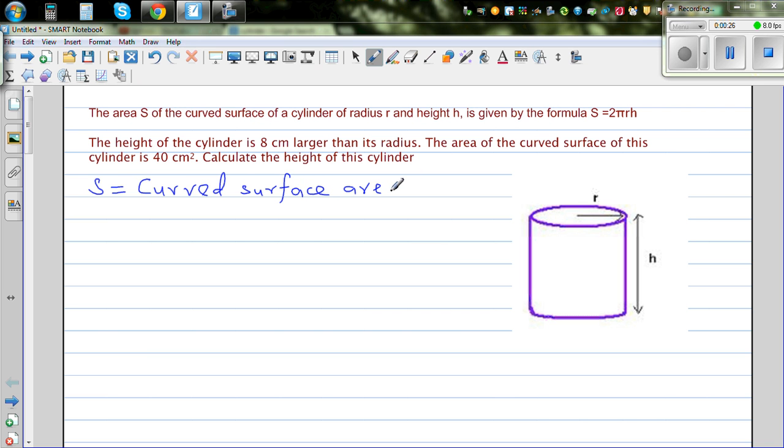A cylinder with a top and bottom has two types of surfaces. One is a curved surface and the top and bottom are flat. So you are talking about this surface which is curved. The formula for that is 2πrh. It's a very simple formula. You can prove this very easily, but our focus is not that.